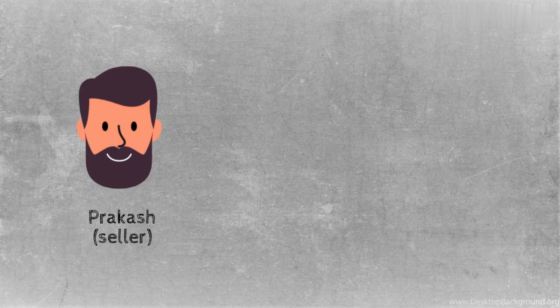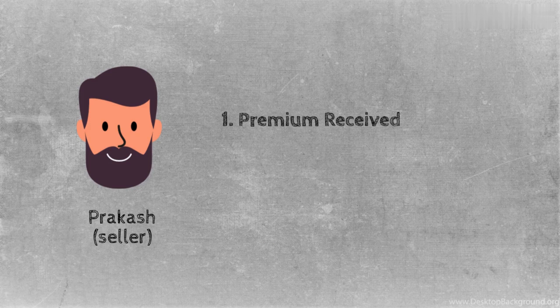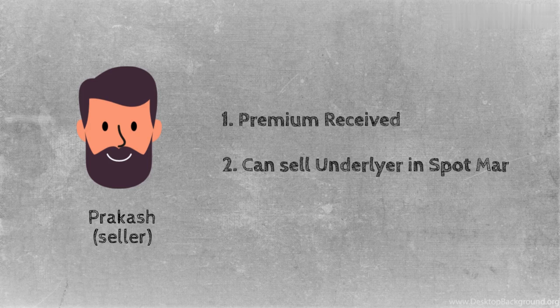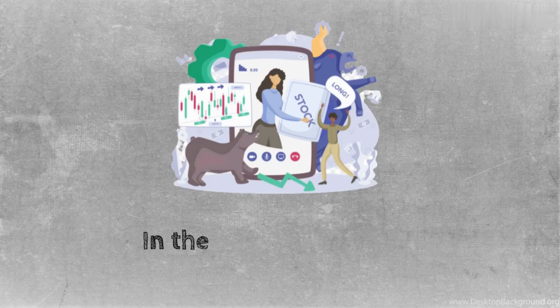You may ask how Prakash benefits from this agreement. For starters, Prakash gets to keep the premium amount of ₹1000 regardless of Ramesh's decision to buy or not buy, since the agreement is entered into in advance before the apples even arrive in the market. Even if Ramesh does not buy them, Prakash can find other buyers in the spot market. Now let's apply the same logic to the financial market.